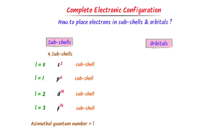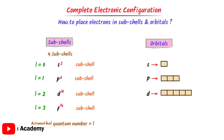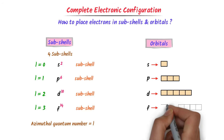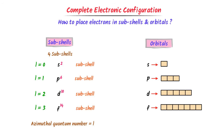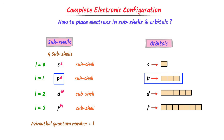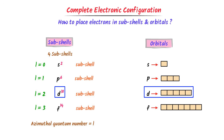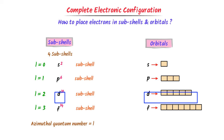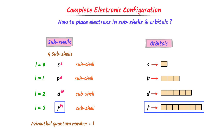Every subshell has degenerate orbitals. S subshell has 1 degenerate orbital, P subshell has 3 degenerate orbitals, D subshell has 5 degenerate orbitals, and F subshell has 7 degenerate orbitals. The simple trick is to divide the number of electrons of each subshell by 2 to get the number of orbitals: 2÷2=1, 6÷2=3, 10÷2=5, 14÷2=7.